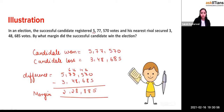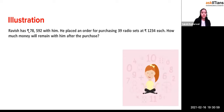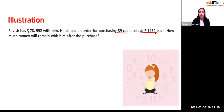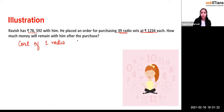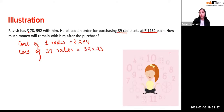Now coming to the next question: Ravish has 78,592 rupees with him. He placed an order for purchasing 39 radio sets, each for rupees 1,234. How much money will remain with him after the purchase? So first, the cost of one radio is rupees 1,234. The cost of 39 radios will be 39 multiplied by 1,234.